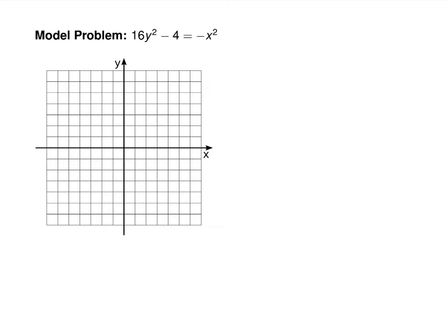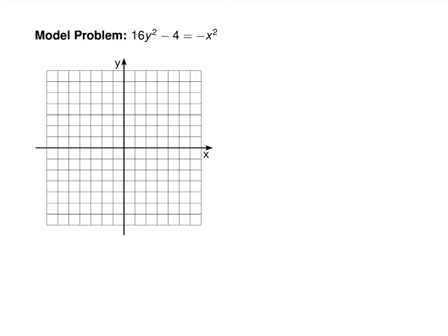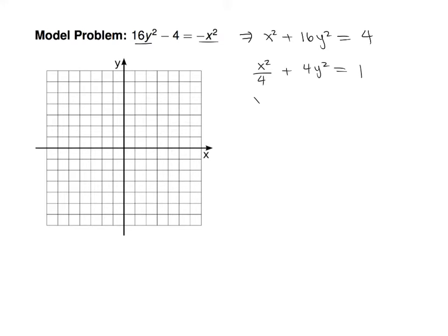Here's an example. You know this is not a parabola because you have both y² and x². Getting x and y on the same side gives x² + 16y² = 4. The x² and y² are added, so we have an ellipse. Dividing by 4 gives x²/4 + 4y² = 1, which we rewrite as x²/4 + y²/(1/4) = 1, or x²/2² + y²/(1/2)² = 1.